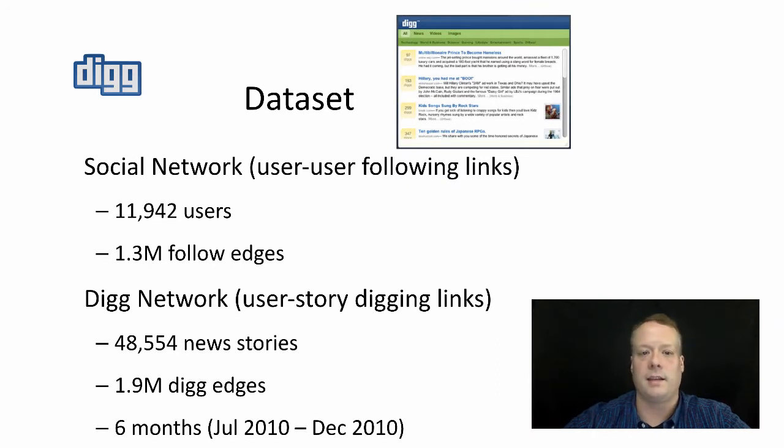We looked at this in the context of a digg.com data set. Digg, if you are not familiar with it, is a collaborative news website. Now, it's got a different format than it did when we looked at it, but it's very similar. The format that it had was very similar to the Reddit format is now. In this format, we looked at a social network of about 12,000 users and all their relationships between each other. I could follow you, and whenever you post a piece of content, I could see what content you posted. Then I could decide whether or not I wanted to dig it, like that content in modern parlance. We also had a dig network. We knew 48,500 stories that people had posted. We knew 1.9 million dig edges. We looked at this content for six months from July 2010 to December 2010.